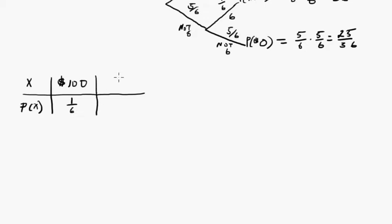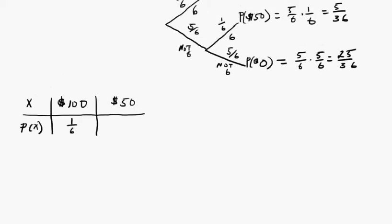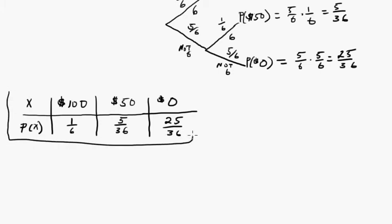Or we're going to win $50. And that was 5 out of 36. Or we're going to win $0. So this is the probability model.